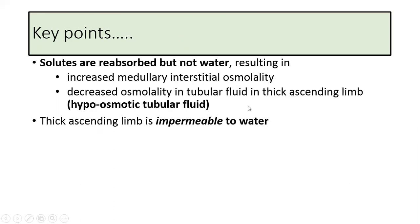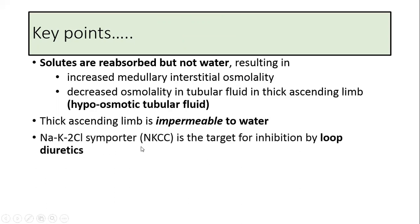Now thick ascending limb is impermeable to water. So it is called as the diluting segment of the nephron. The sodium potassium 2 chloride symporter is the target for inhibition by loop diuretics.